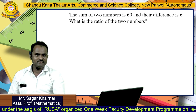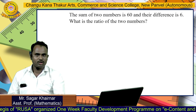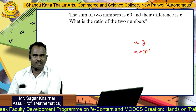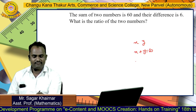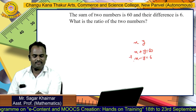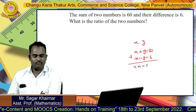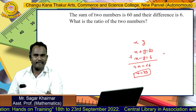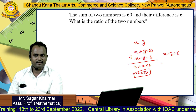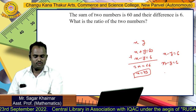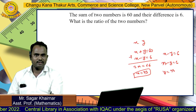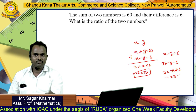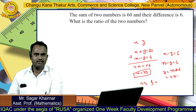The sum of two numbers is 60 and their difference is 6. What is the ratio of the two numbers? We consider two numbers x and y. Their addition is x plus y equals 60, and their difference is x minus y equals 6. Adding these two equations we get 2x equals 66, so x equals 33. Then 33 minus y equals 6, so y equals 27. We got the two numbers: 33 and 27.